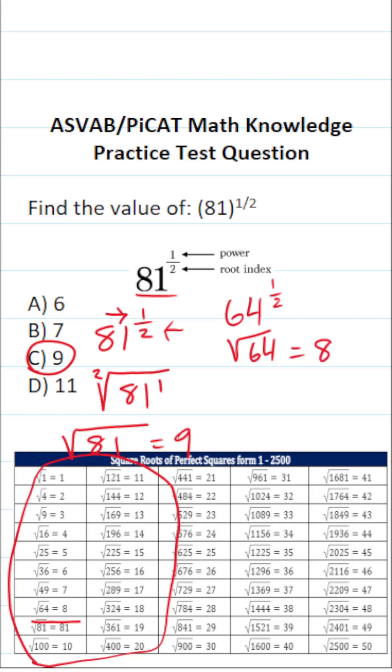If this said what is 144 to the one half power you should know that this is asking you to find the square root of 144 and you can see that that is 12. That is that one.